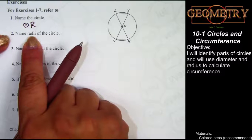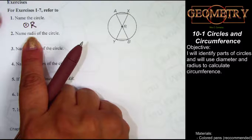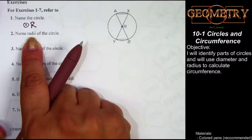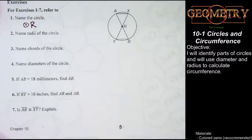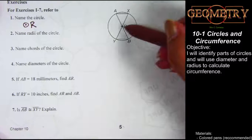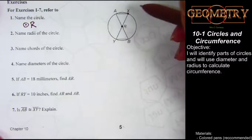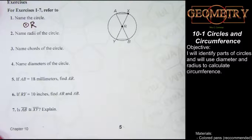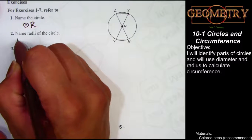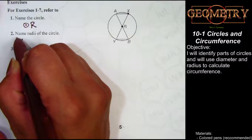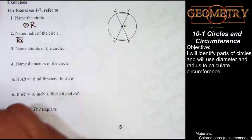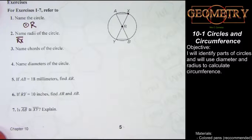This word is pronounced 'radii' — it means more than one radius — and they want us to name all of the different line segments that are a radius of this circle. So all the line segments that have one endpoint on the center of the circle and the other endpoint on the edge. RX would be one of the radii, and I'm going to put the symbol for a line segment over it. Pause the video now to identify and name all of the radii in the circle, and when we come back we'll reveal the answers.